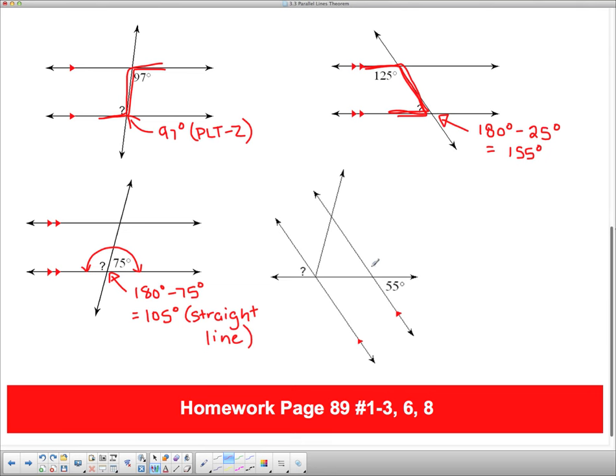Now lastly here we've maybe got some figuring to do on this one, because this angle's way over here and we don't have anything right close to it. So we're going to take this 55 and start trying to find some angles in here. I know that this angle in here is going to be 55 degrees because of the Z pattern.